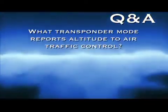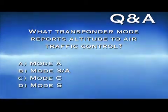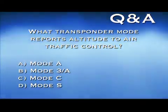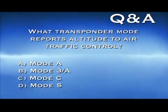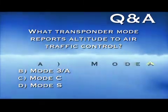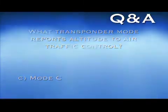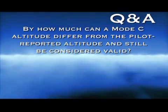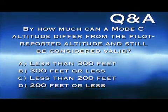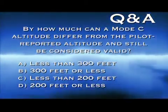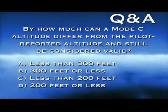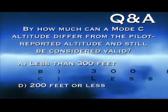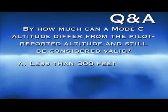What transponder mode reports altitude to air traffic control radar systems? A. Mode A. B. Mode 3A. C. Mode C. Or D. Mode S. The answer is C — Mode C is the function that reports altitude. By how much can a Mode C altitude differ from the pilot reported altitude and still be considered valid? A. Less than 300 feet. B. 300 feet or less. C. Less than 200 feet. D. 200 feet or less. The answer is A — the pilot reported altitude must differ by less than 300 feet in order to be considered valid.